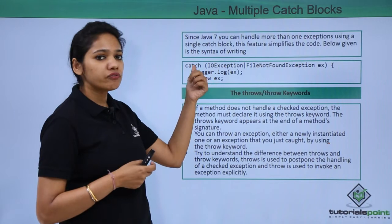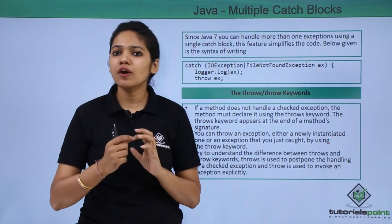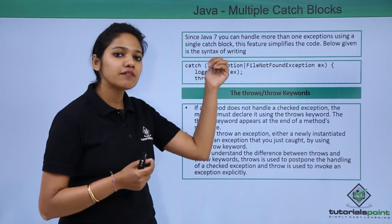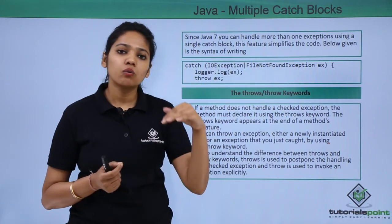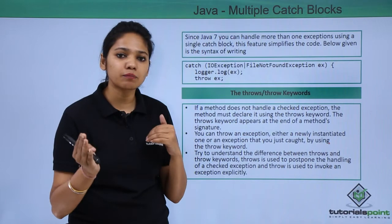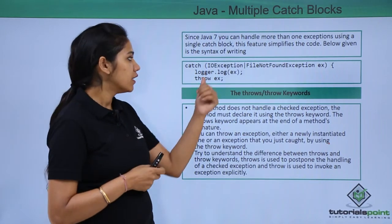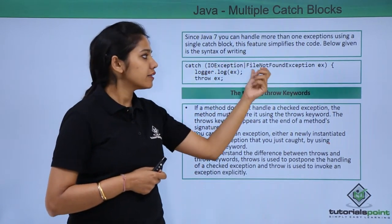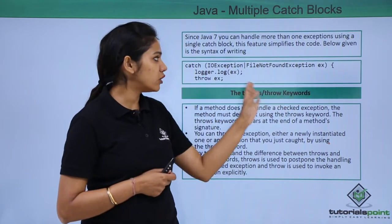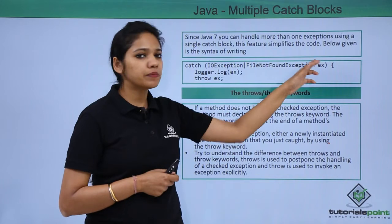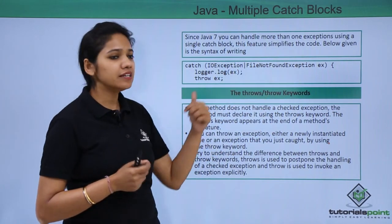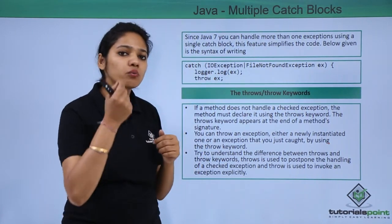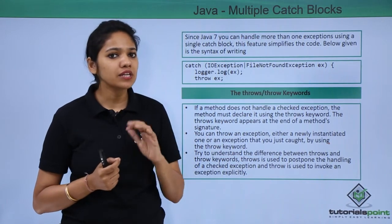If you want one catch block to handle multiple exceptions, till now you would write multiple catch blocks for each exception. But from Java 7, a feature is available where one catch block can handle multiple exceptions by separating them with a pipe symbol. So we write: catch (IOException | FileNotFoundException ex). The exception information is stored in the object ex, and then you can throw this ex using the throw keyword.